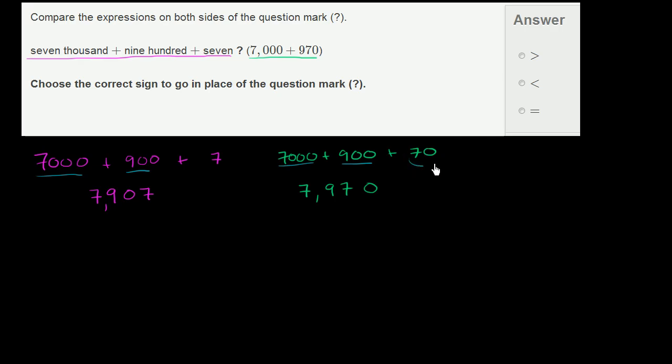And clearly, 70 is greater than 7. So the number on the right is greater than the number on the left. Or the number on the left is less than the number on the right.